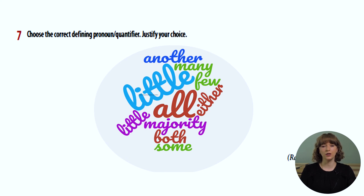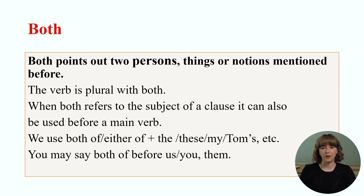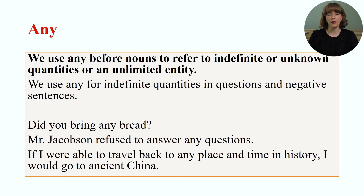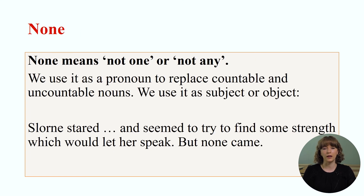For the next exercise, you will need to revise the usage of pronouns and quantifiers and pay attention to the difference between them. You have some valuable information in your school books, page 141. Be sure you consult it before trying your hand at choosing the correct defining pronoun or quantifier. All is a generalizing pronoun — it takes a group of things or persons as a whole. Both points out two persons, things or notions mentioned before; the verb is plural with both. Either has two meanings: each of the two, or one or the other. We use any before nouns to refer to indefinite or unknown quantities or an unlimited entity. Neither allows us to make a negative statement about two people or things at the same time. None means not one or any.